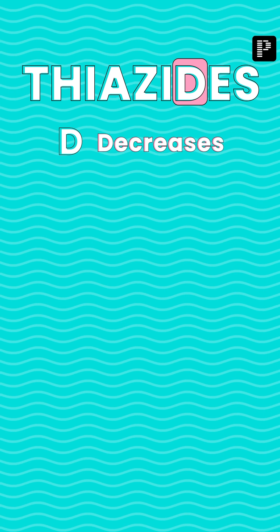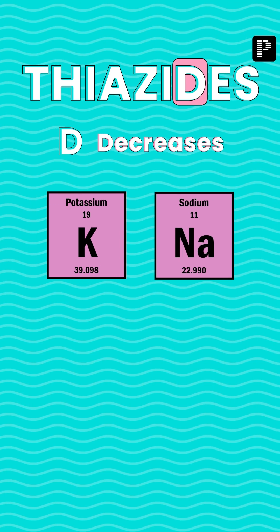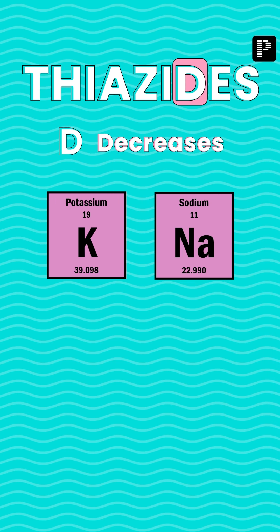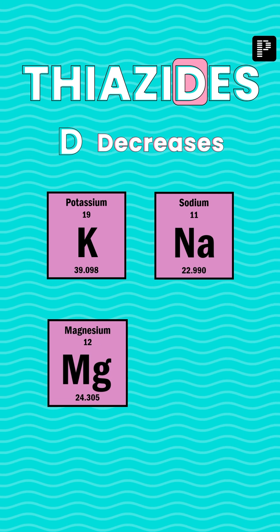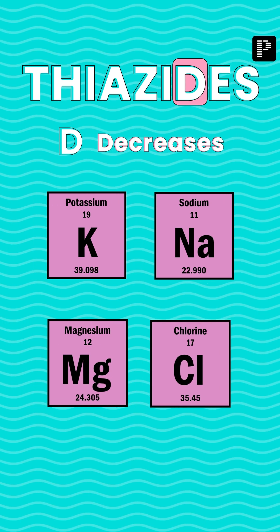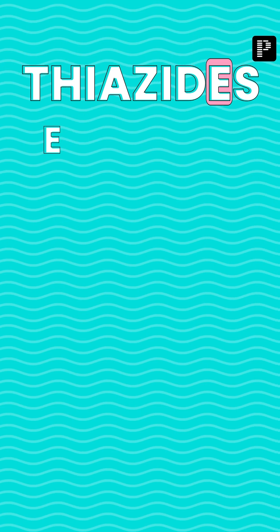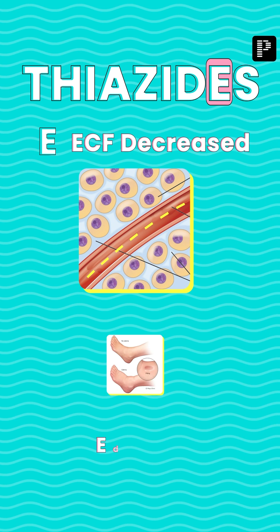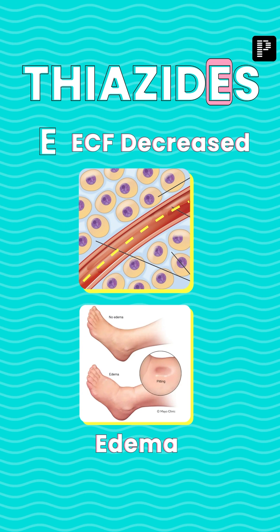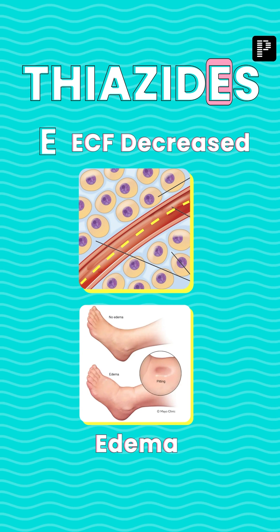The next letter is D — D stands for decreases. It decreases ions such as potassium, sodium, magnesium, and chloride. D also stands for diuretic — it is a diuretic with medium efficacy.